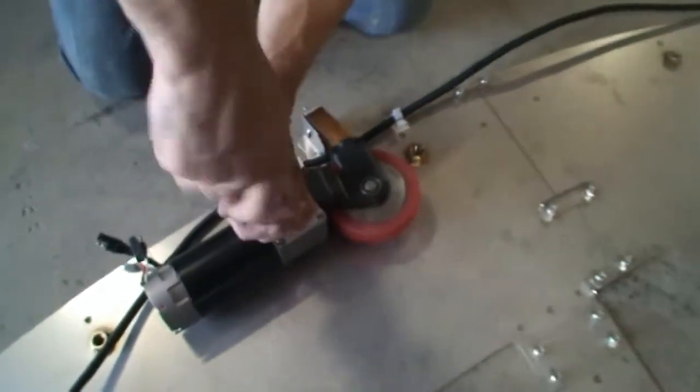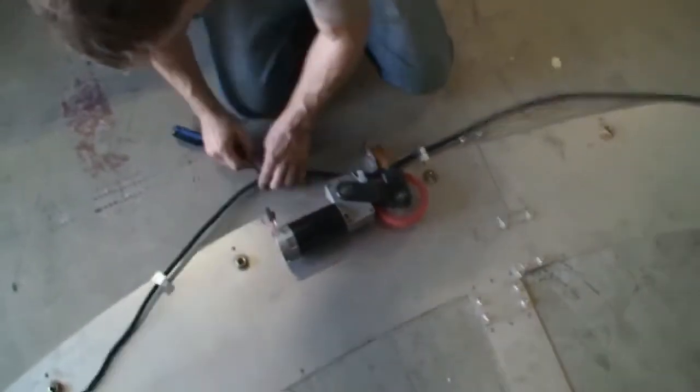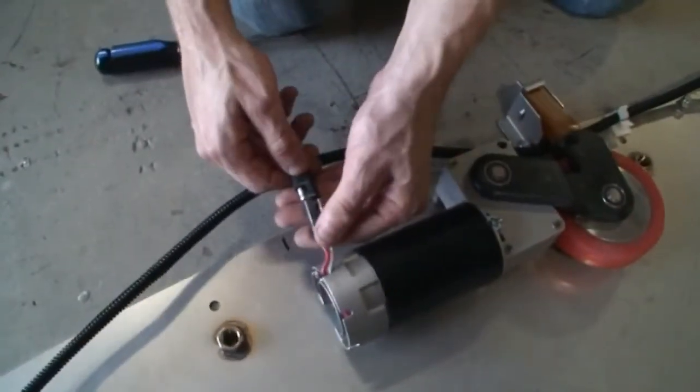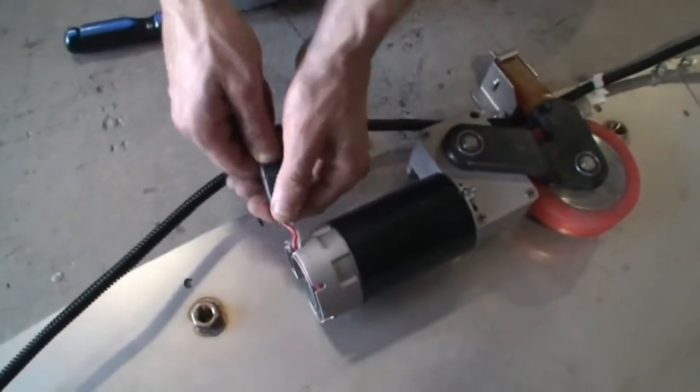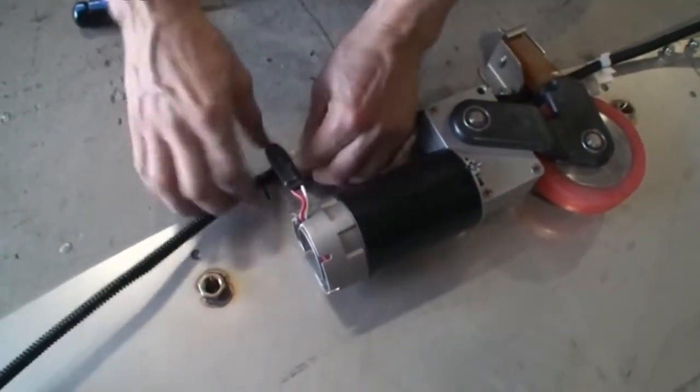When you put the motor down, you're simply going to plug it in. It's a two-way plug. There's no way to get it backwards. Once you have this plug in, you're going to fold the wire harness in.